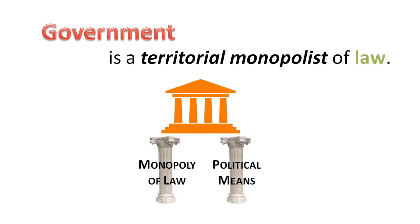Government is the only organisation that uses the political means — that is, the widely accepted use of aggression to attain wealth. For example, the monopolist declares its own act of theft to be legal, calling it taxation and enforcing compliance. Everyone else must attain wealth using the economic means: producing something of value to others and then engaging in voluntary acts of trade.